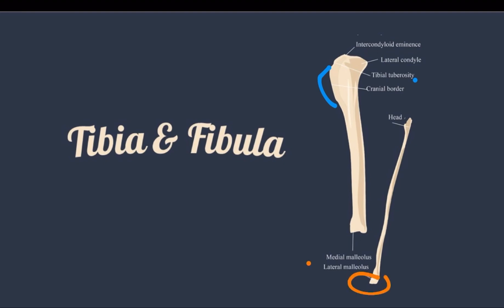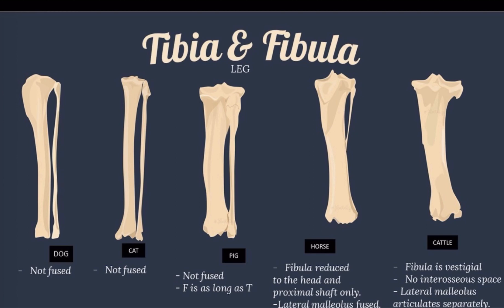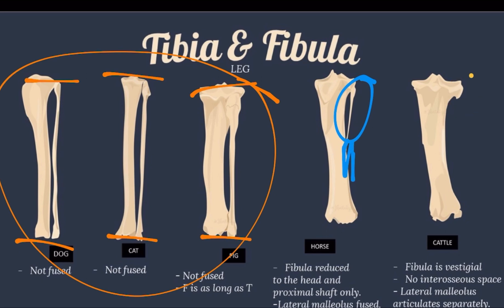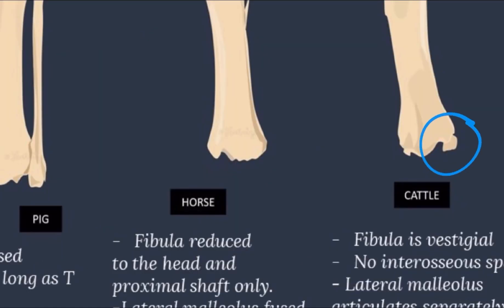The lateral malleolus is the distal end of the fibula. The medial malleolus can be found at the distal end of the tibia. The interosseous space is the space between the tibia and fibula. In dogs, cat, and pig, they are not fused and the fibula is as long as the tibia. In the horse, the fibula is reduced to the head and proximal shaft only, and the lateral malleolus is fused. In cattle, the fibula is vestigial, there is no interosseous space, and the lateral malleolus articulates separately.